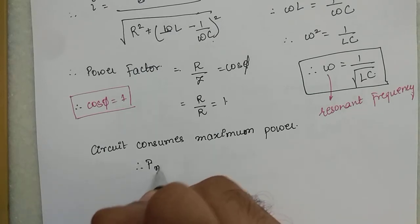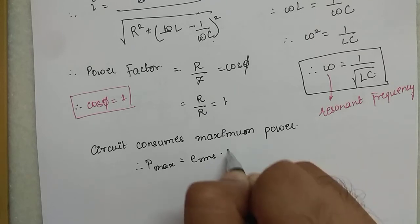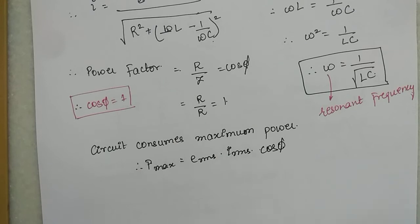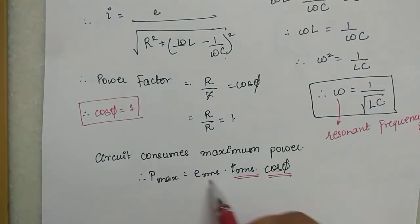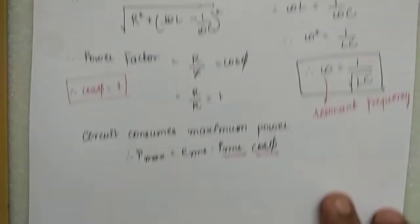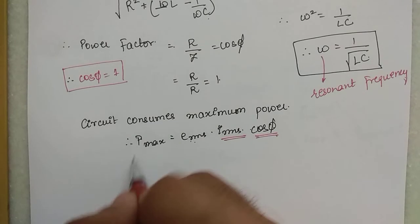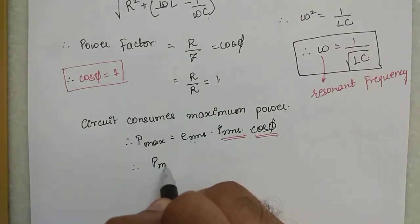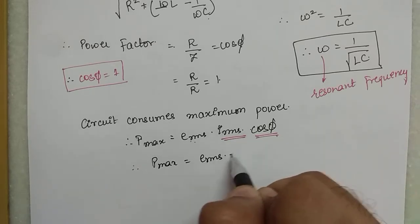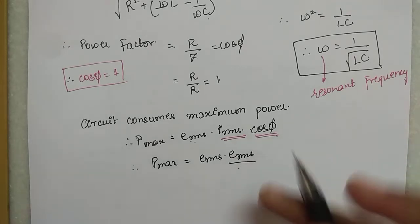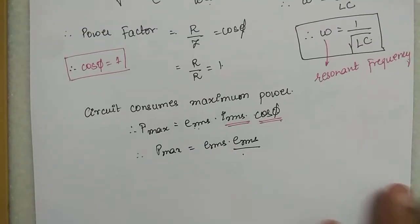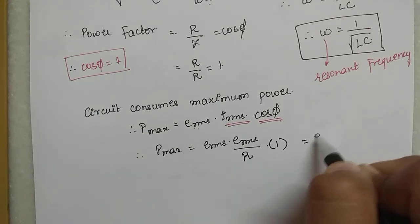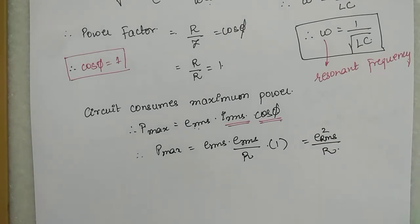Maximum power consumed P_max equals E_rms × I_rms × cos φ. Since cos φ = 1 and I_rms = E_rms/Z = E_rms/R at resonance, this simplifies to P_max = E²_rms / R. This is the maximum power consumed by the circuit at resonant frequency.